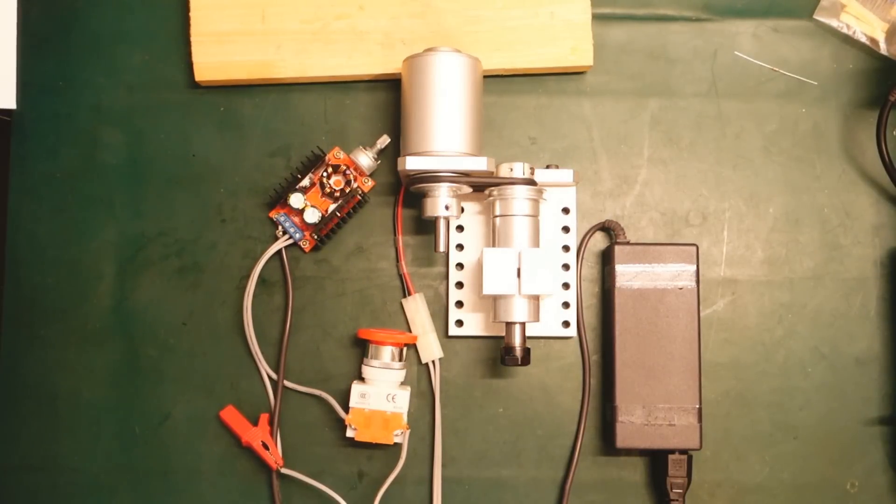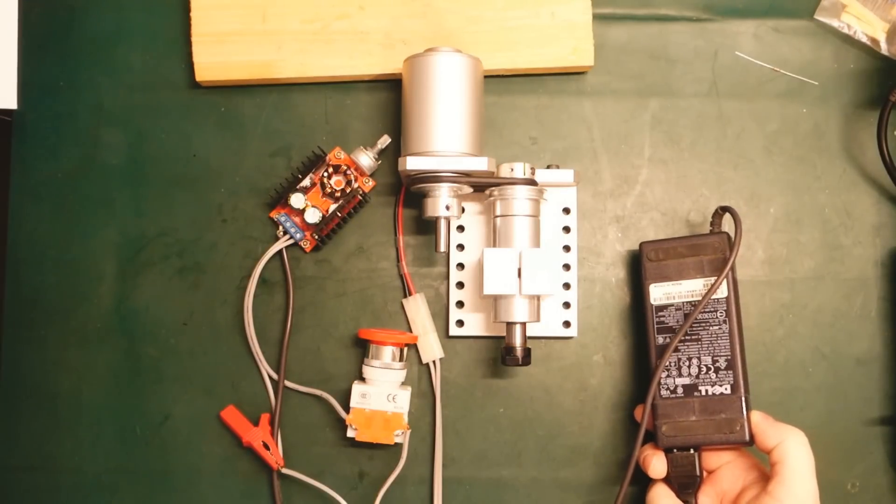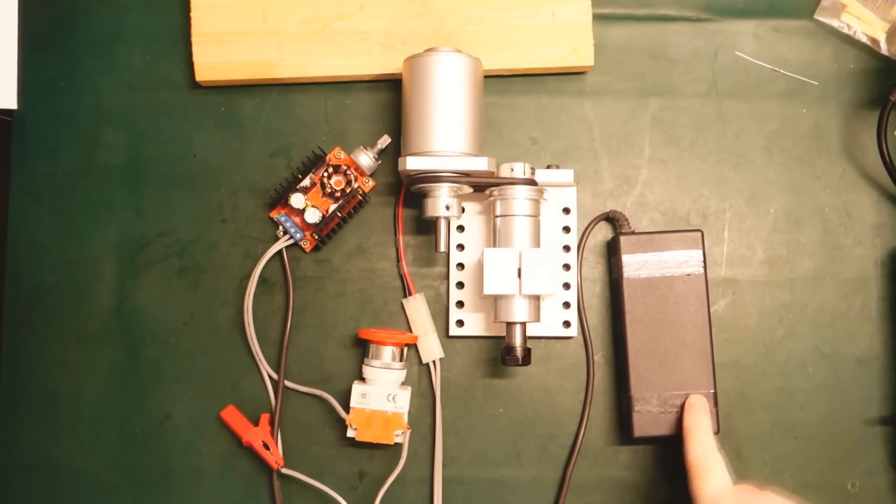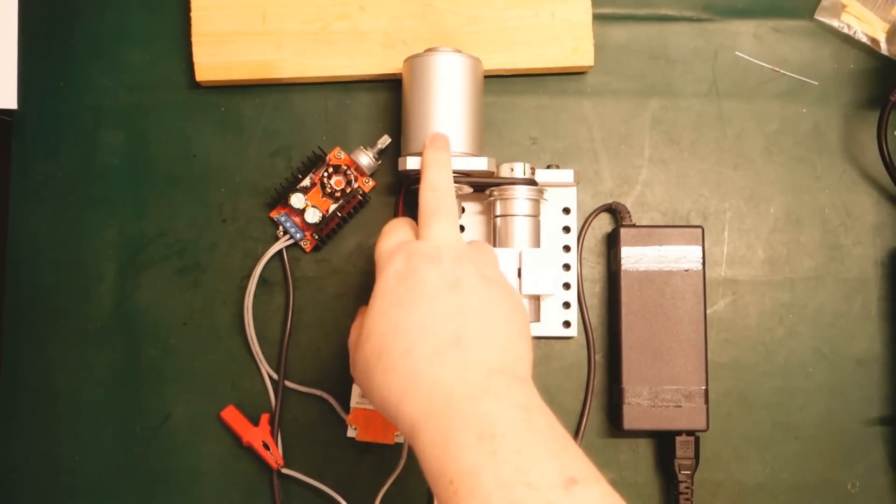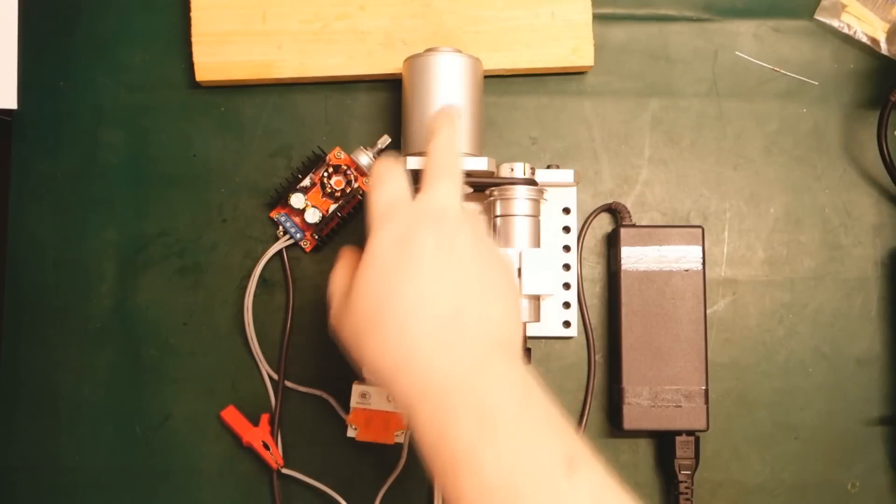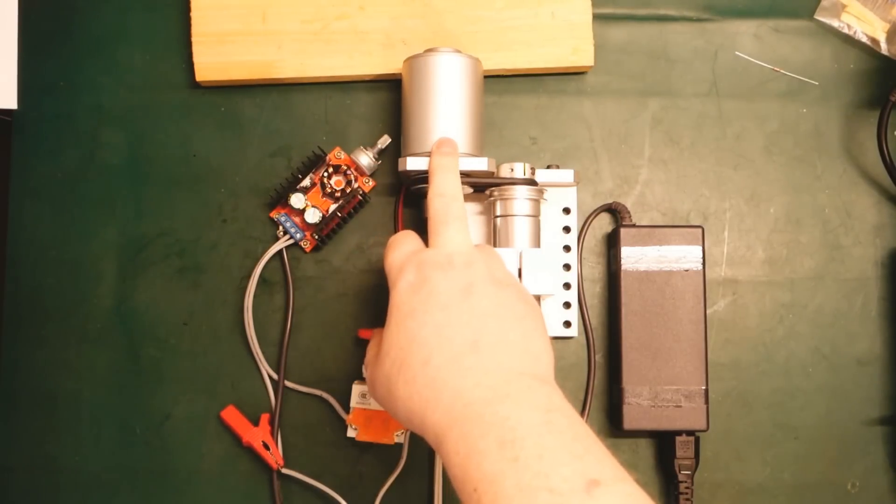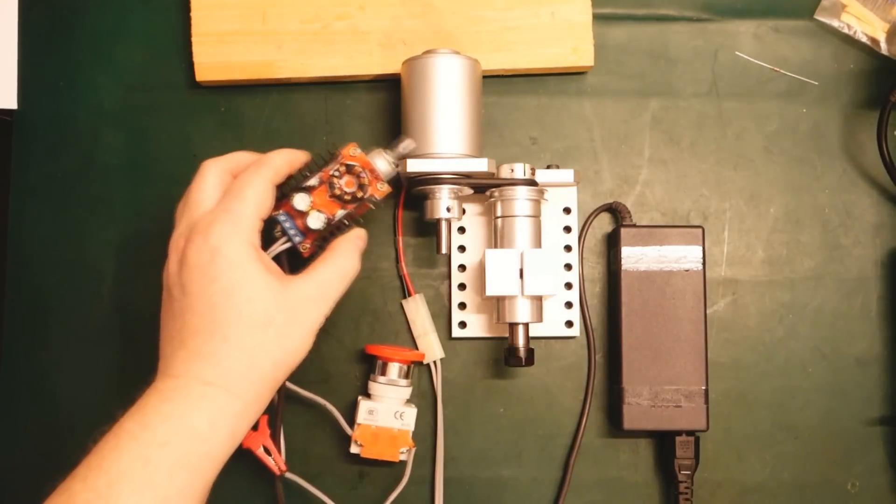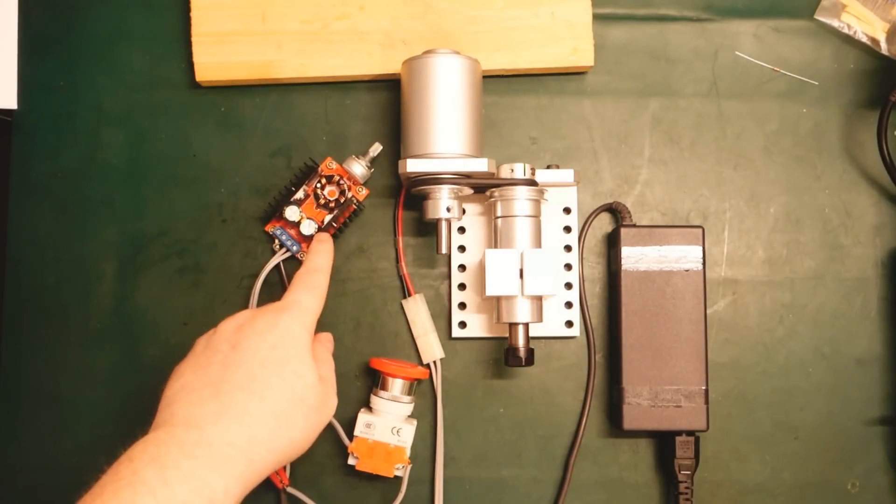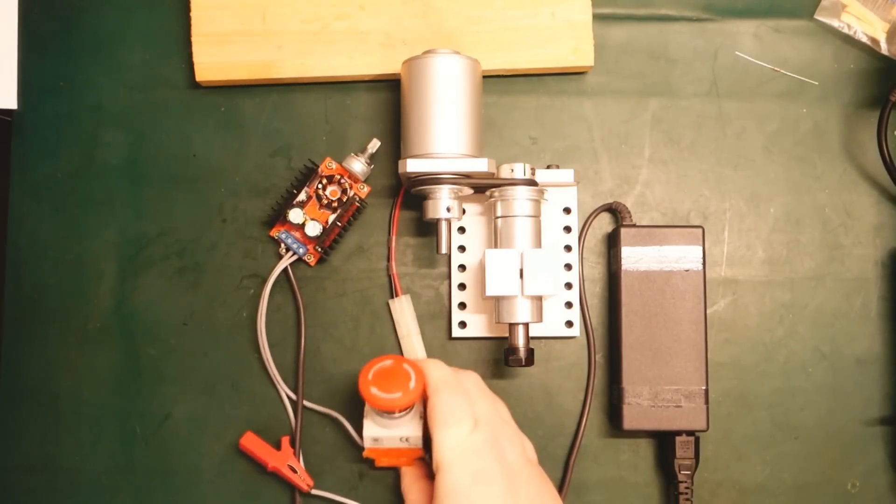What we have here is a switch mode power supply rated for 20 volts at four and a half amps. We have a spindle here with a DC motor. This is a 24 volt motor rated for something like 50 watts under load. We have a small step up converter here.